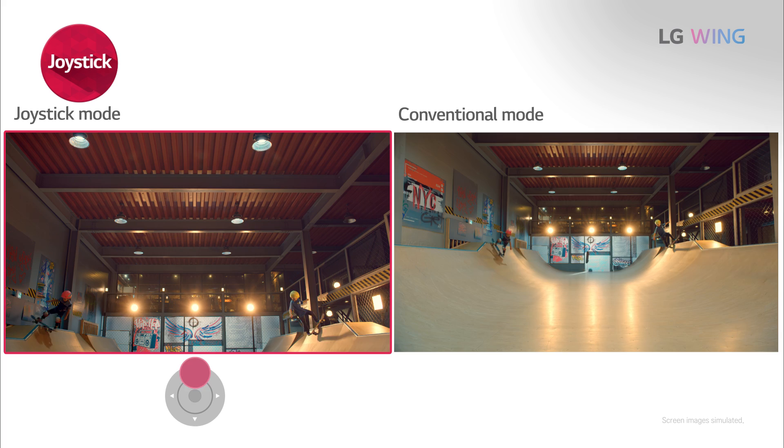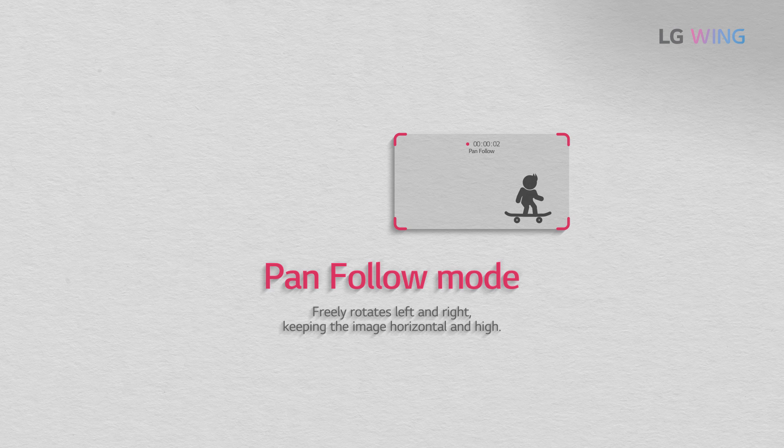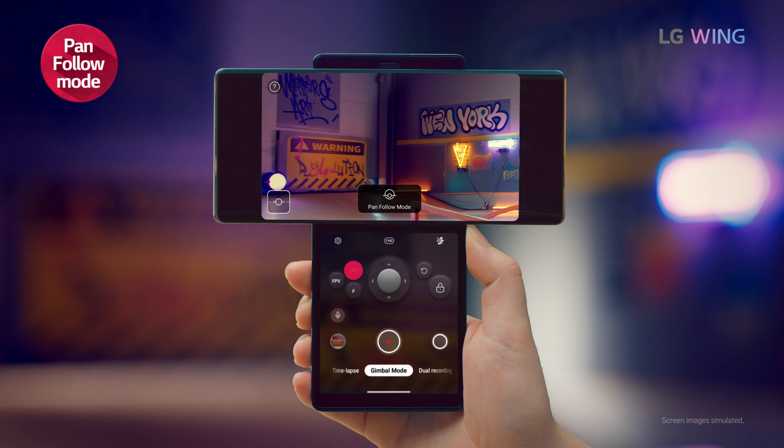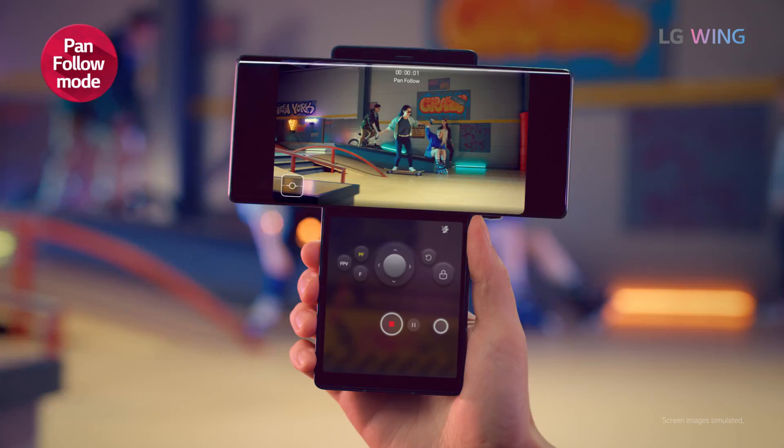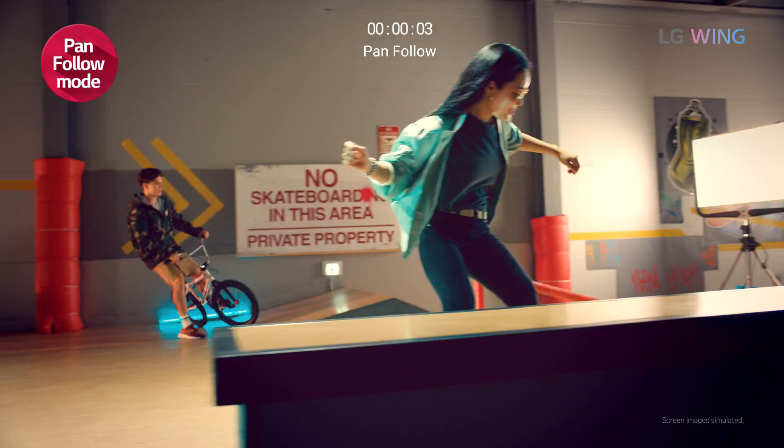PAN FOLLOW MODE. This function is useful mainly when you want to shoot on the move. In this mode, the movements on your left and right are captured on the screen as you move. Rotation in the roll and tilt directions gets fixed, but the movements in the pan direction are kept stable.